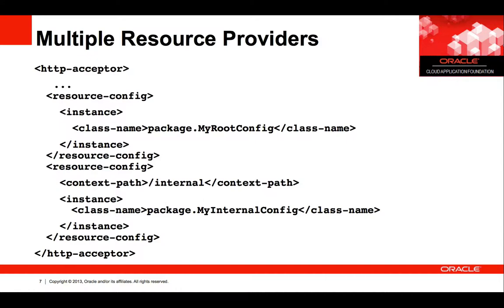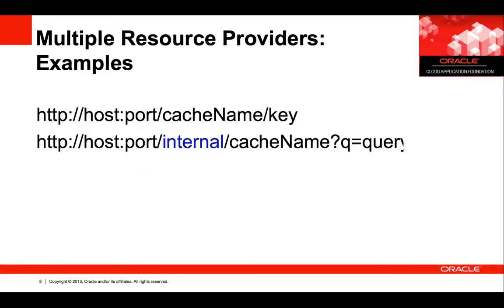Previously, you could only configure one resource provider for each HTTP server embedded in a Coherence proxy server. You can now register multiple resource providers or web applications to Coherence REST. Here is an example where we defined two resource providers in the HTTP acceptor configuration — the first one is under root, and the second one is under internal. Here are examples on how to get data from each provider: the first makes a query from the root provider, and the second from the internal provider.